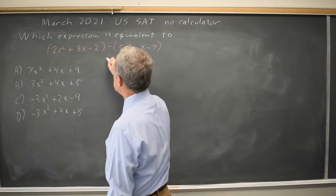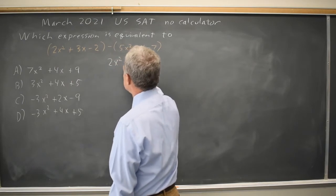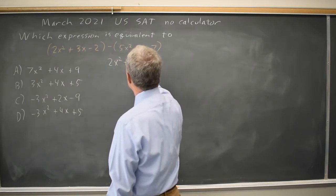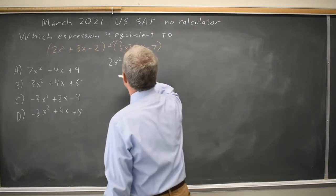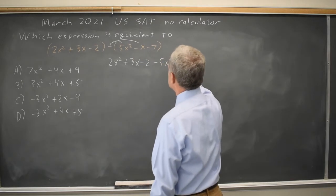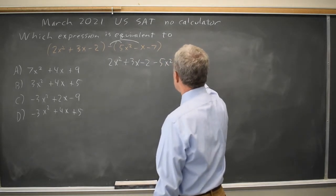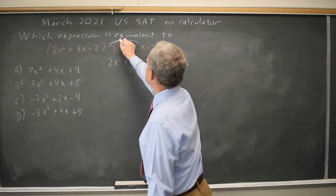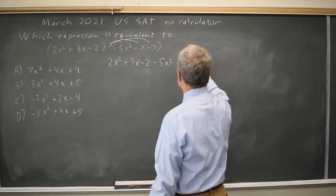I can drop these first parentheses: 2x squared plus 3x minus 2, and then the negative goes to the 5x squared, minus 5x squared. The negative goes to the minus x, minus the negative is plus x, and the negative goes to the minus 7, minus the negative is plus 7.